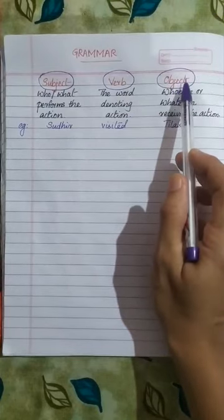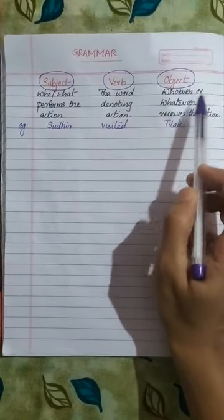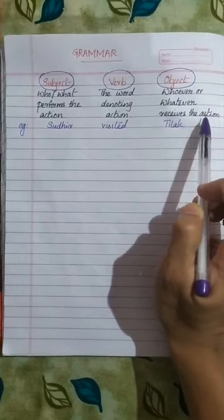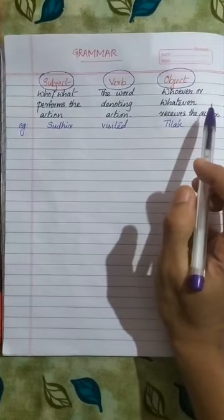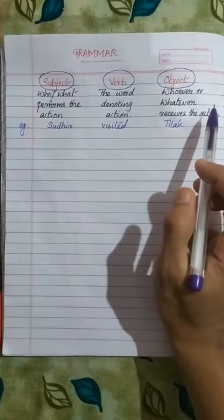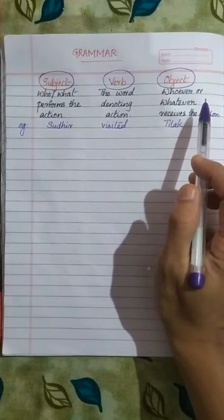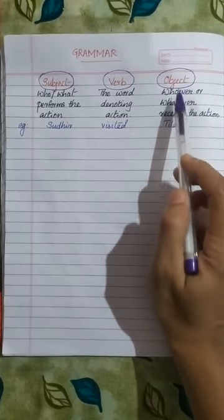What do you mean by an object? An object is whoever or whatever receives the action. Whoever or whatever receives the action is known as the object.